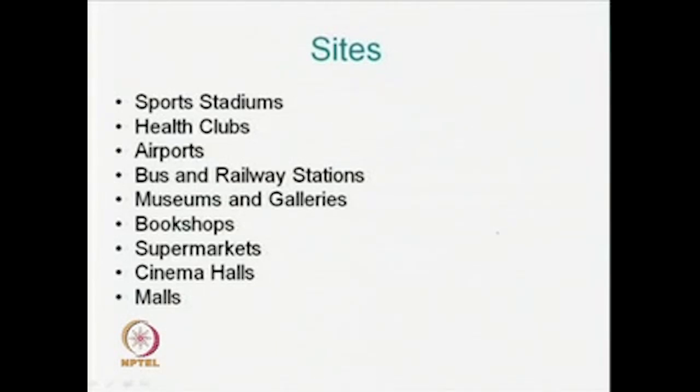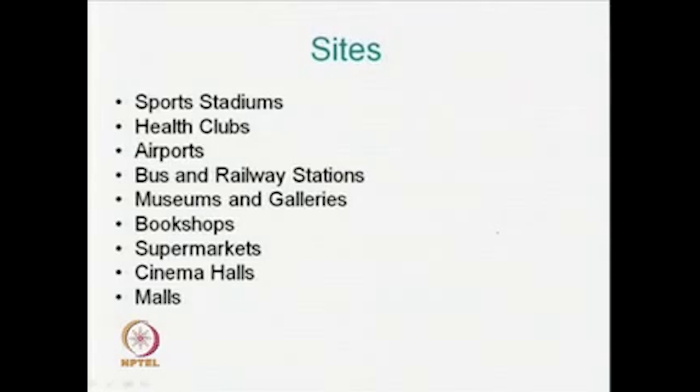The sites of such McDonaldized places in the 20th and 21st centuries are sports stadiums, health clubs, airports, bus and railway stations, museums and galleries, bookshops, supermarkets, cinema halls, and malls. One thing in common is that you are not expected to spend much time in these places. Eateries attached to museums, bookshops, cinema halls, and supermarkets are always associated with speed — speed as a hallmark of modern times. As economies change and become more globalized, there is diversity and variation that also affects food consumption and practices like eating out.